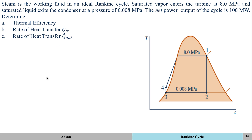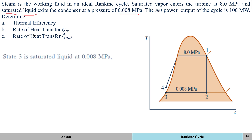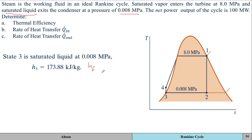For state three, the fluid is a saturated liquid at 0.008 MPa or 0.08 bar. We go into the table and look up the saturated liquid value — this is h_f in the table. h_f represents the enthalpy at the saturated liquid line.